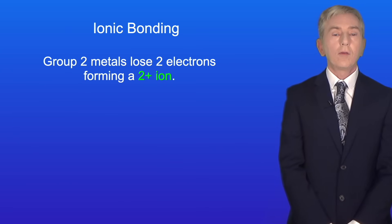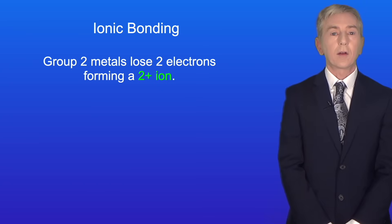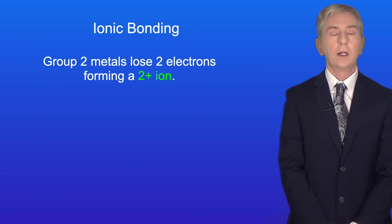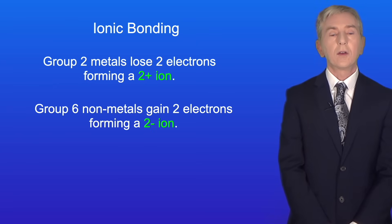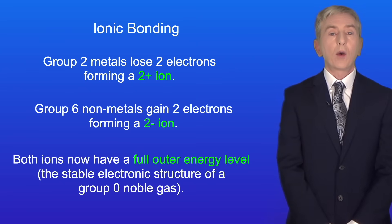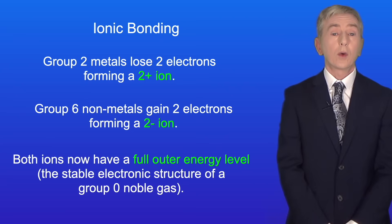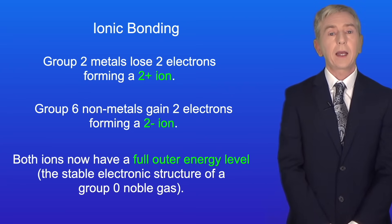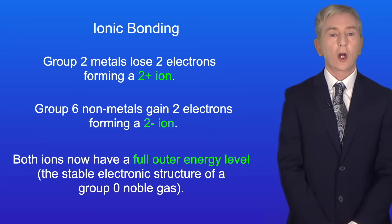To recap: during ionic bonding, group 2 metals lose 2 electrons forming a 2 positive ion, and group 6 non-metals gain 2 electrons forming a 2 negative ion. Both ions now have a full outer energy level — in other words the stable electronic structure of a group 0 noble gas.